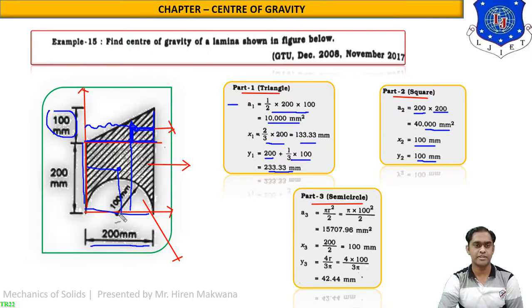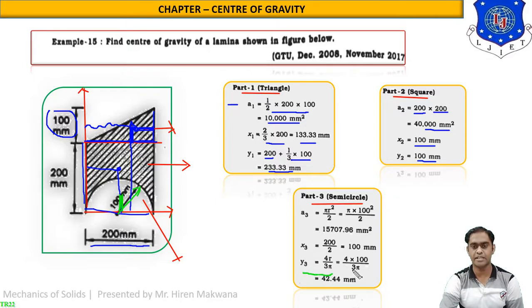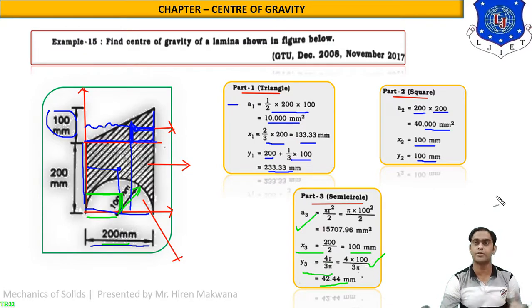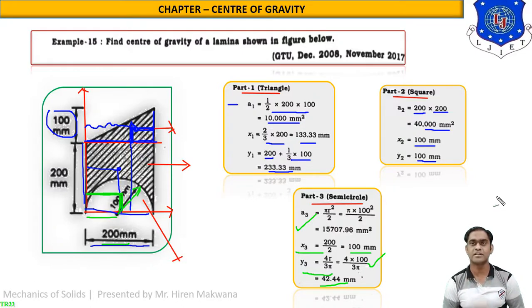For part three, the semicircle: radius r = 100 mm. The CG formula from the center is 4r/(3π), so y3 = 4 × 100 / (3π) = 42.44 mm. x3 is from the y-axis to the center = half the diameter = 100 mm. Area = πr²/2 = π × 100² / 2 = 15,707.96 mm².